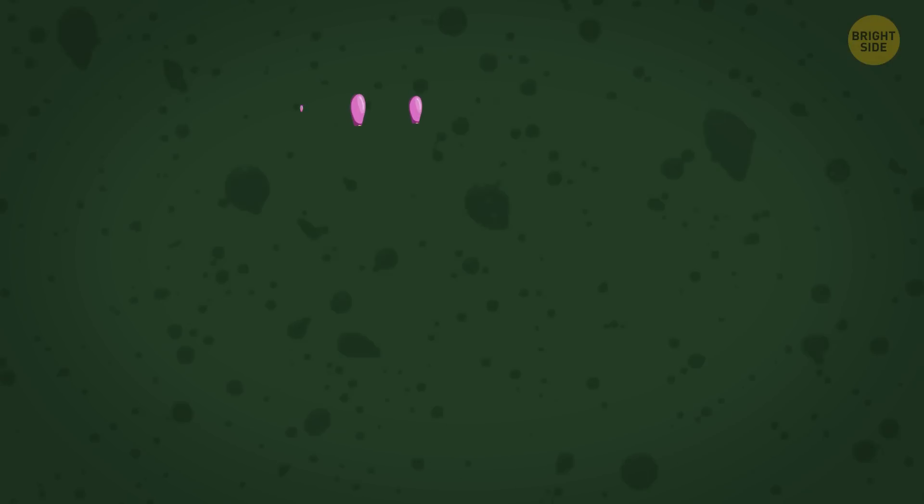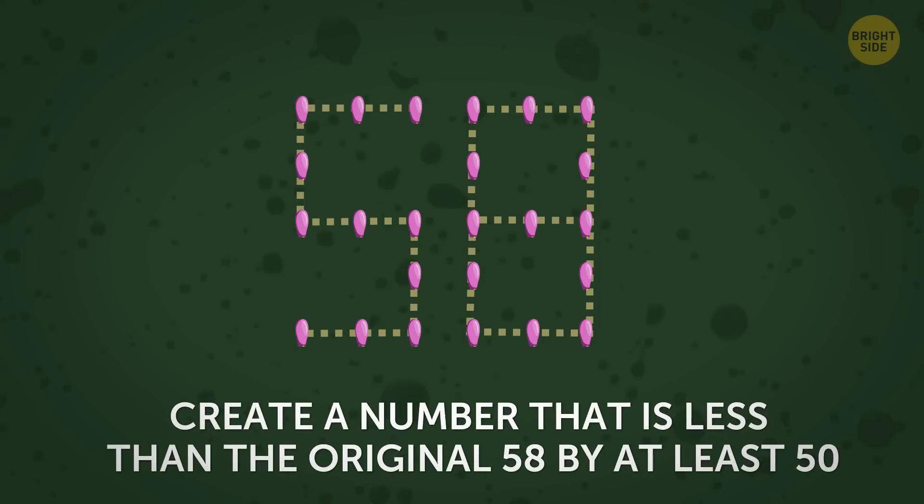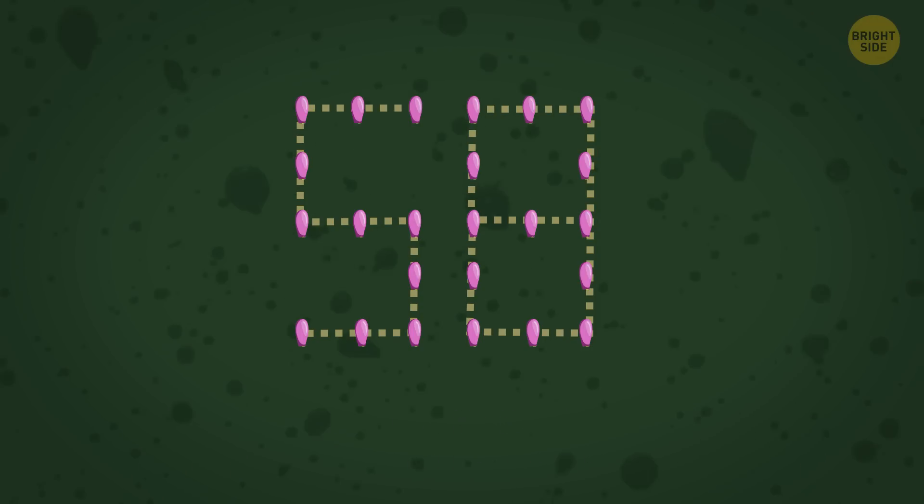The next puzzle will require 24 match heads. They're arranged in the number 58. The challenge is to remove some match heads and create a number that is less than the original 58 by at least 50. Can you figure out the minimum number of match heads that should be removed? To solve this mystery you need to take away at least 2 match heads. This way you'll get the number 5.9 which matches the task perfectly.